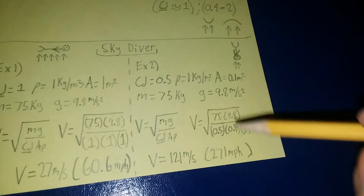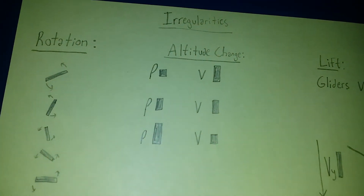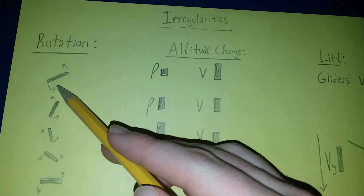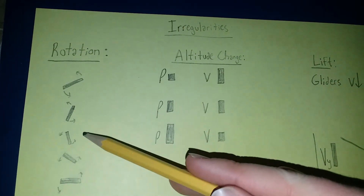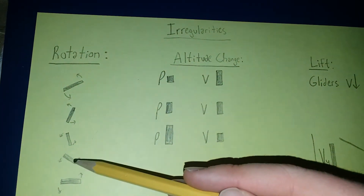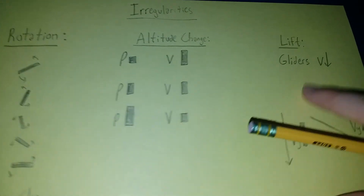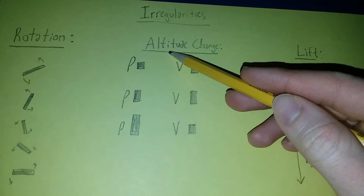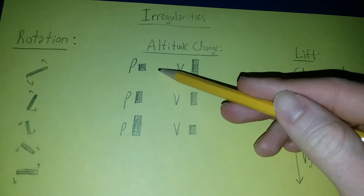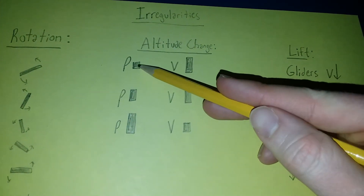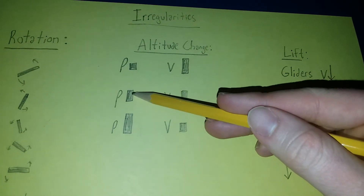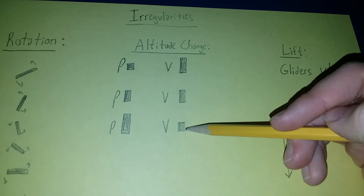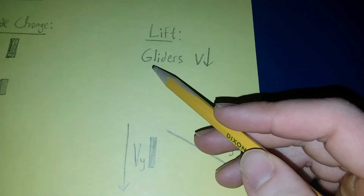Things that complicate this calculation include a rotating object, such as a spinning coin falling straight down — the cross-sectional area continuously changes, affecting the result. Also, air density changes with altitude: it is less dense at higher altitudes, meaning terminal velocity is higher up high, and decreases as the object descends and the air becomes denser closer to the ground.